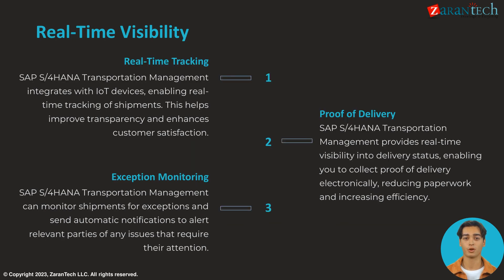Real-time visibility is critical for transportation management. SAP S/4HANA Transportation Management provides real-time tracking by integrating with IoT devices, electronic proof of delivery for efficiency, and automated exception monitoring and notifications.